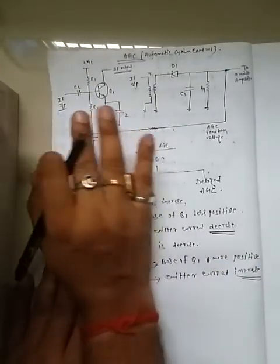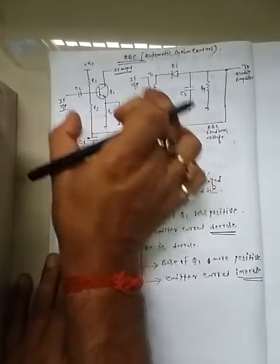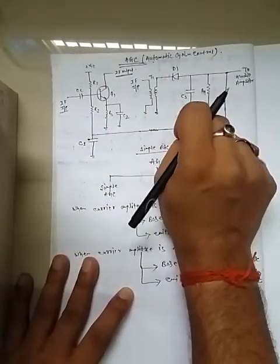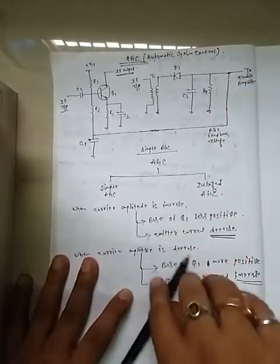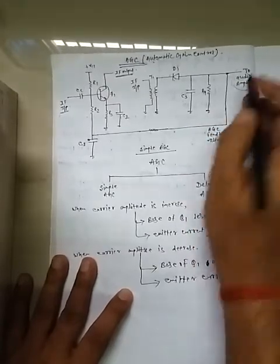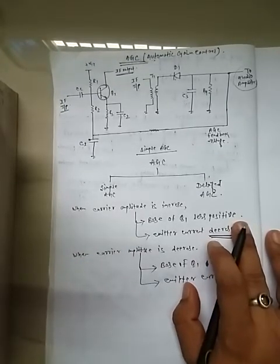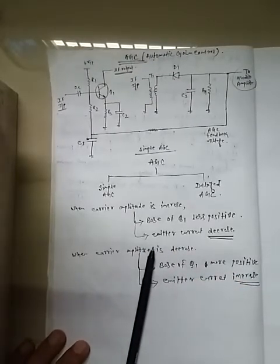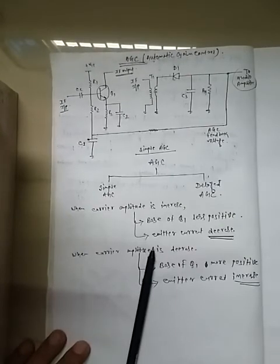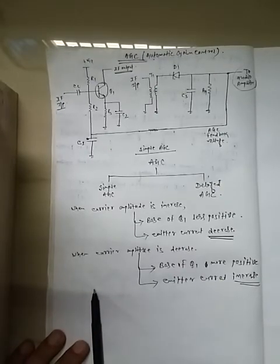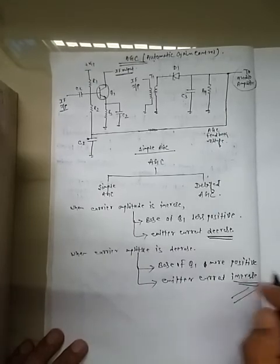The output of the AGC goes to the audio amplifier to amplify the audio signal, providing constant gain. The constant gain signal goes to the audio amplifier for amplification. This concludes the topic of the AGC circuit.